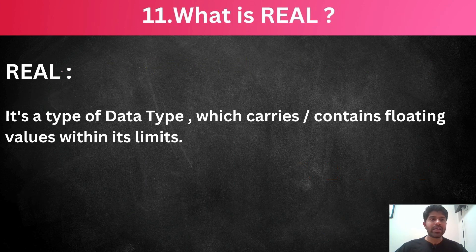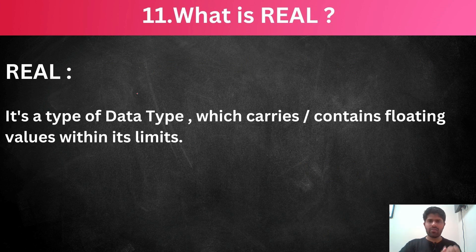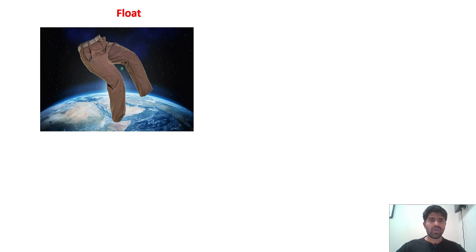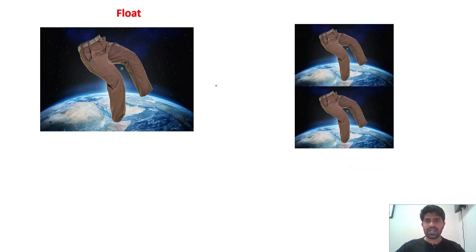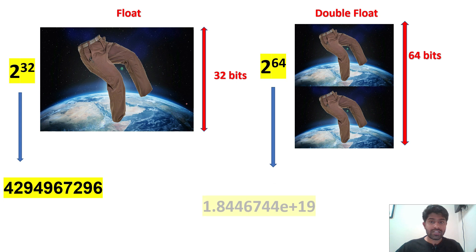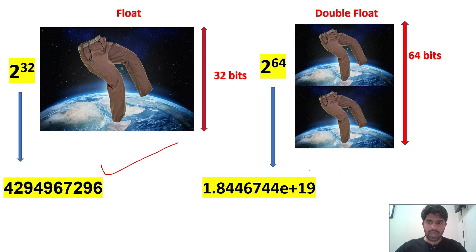Now, we will go to the real value. Sir, already it is done. Negative and positive values we have. Zero we have. One or zero we have. Why the hell I want real? Just check it. It is a type of data type which carries or contains the floating values within its limits. So, see. Now, I have one float and the double float. For single float, I have to take 32 bits. Means in the floating value minimum you need 32 bit. This much. So, if it is more than one like something kind of thing. Then we will use it. Minimum it will go.